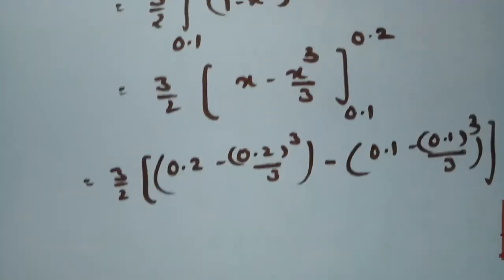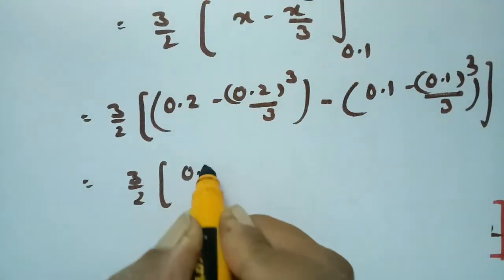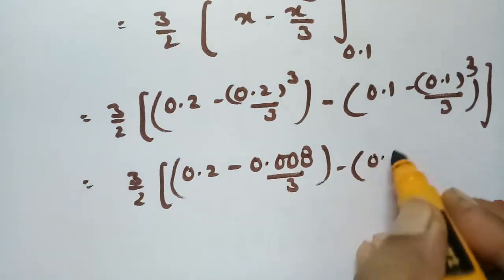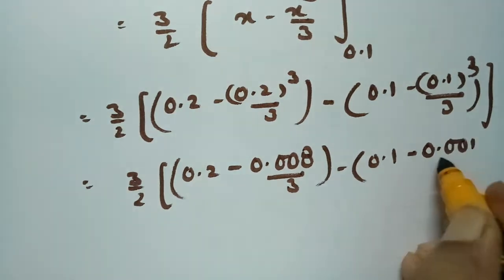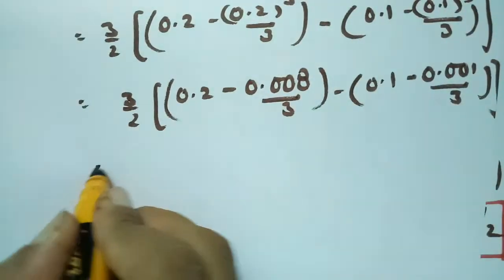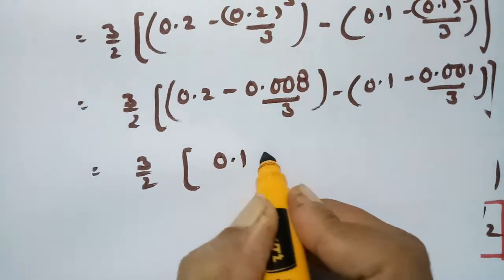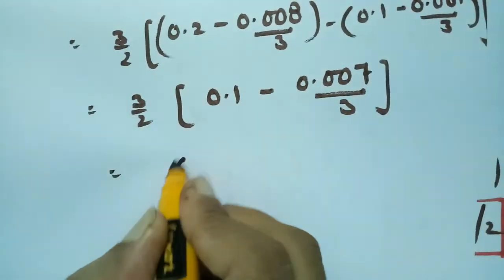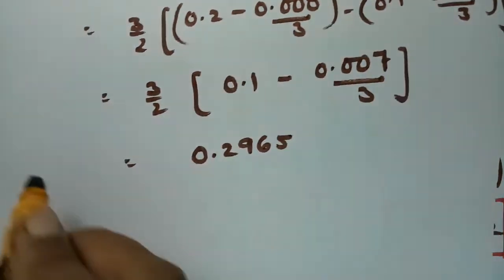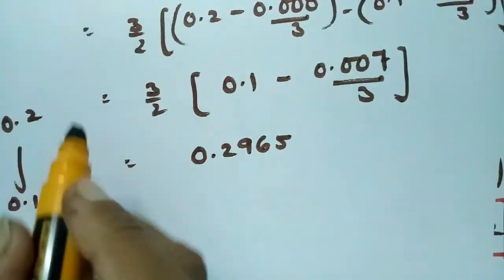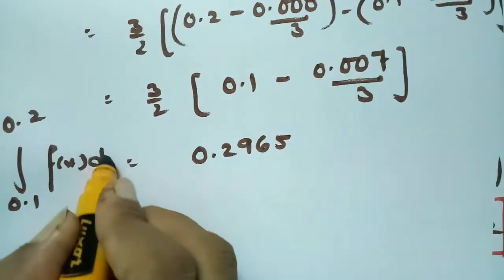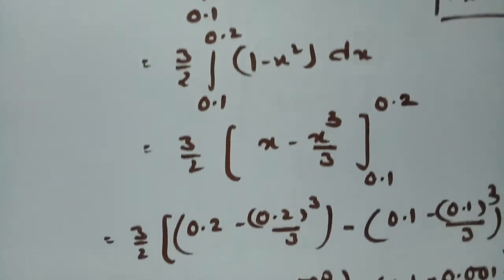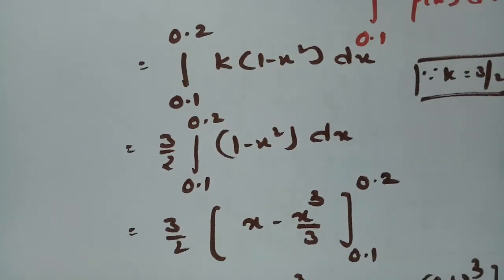This gives (3/2) times [(0.2 - 0.008/3) - (0.1 - 0.001/3)], which equals (3/2) times [0.1 - 0.007/3], and the value here is 0.2965. Therefore the probability that x lies between 0.1 and 0.2 is 0.2965.